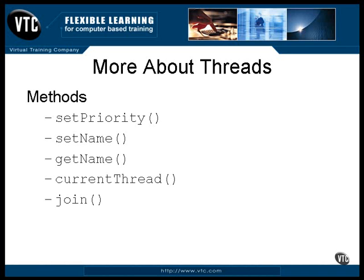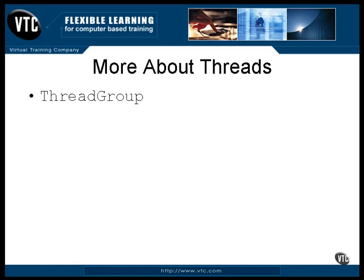The join method is intended to make it possible for you to have two threads end together. All it does is sleep until the other thread dies, then it returns. The ThreadGroup class can be used to maintain a list of a group of threads. It has a number of methods that allow you to call one method and, in effect, call the same method on that entire group of threads.